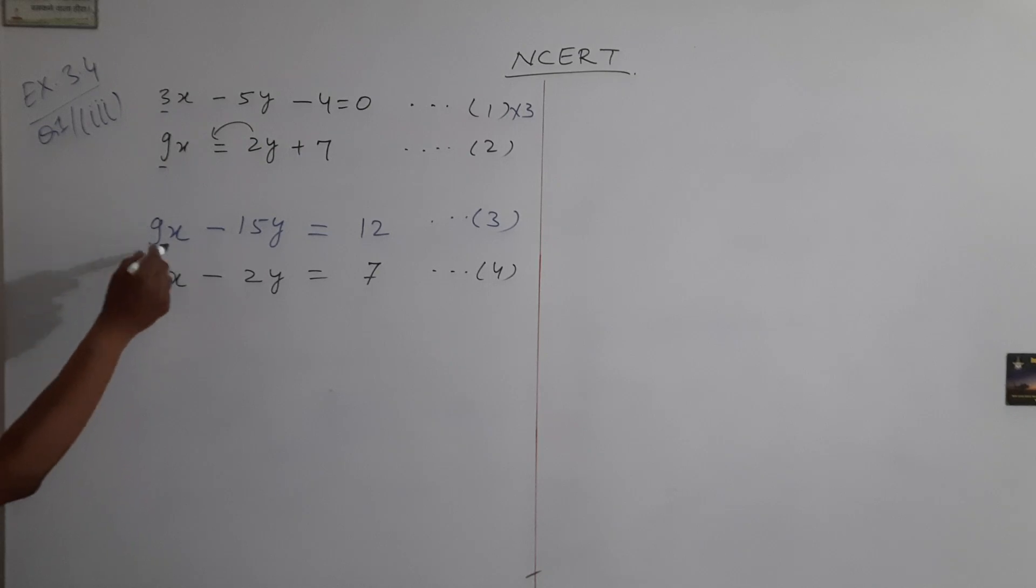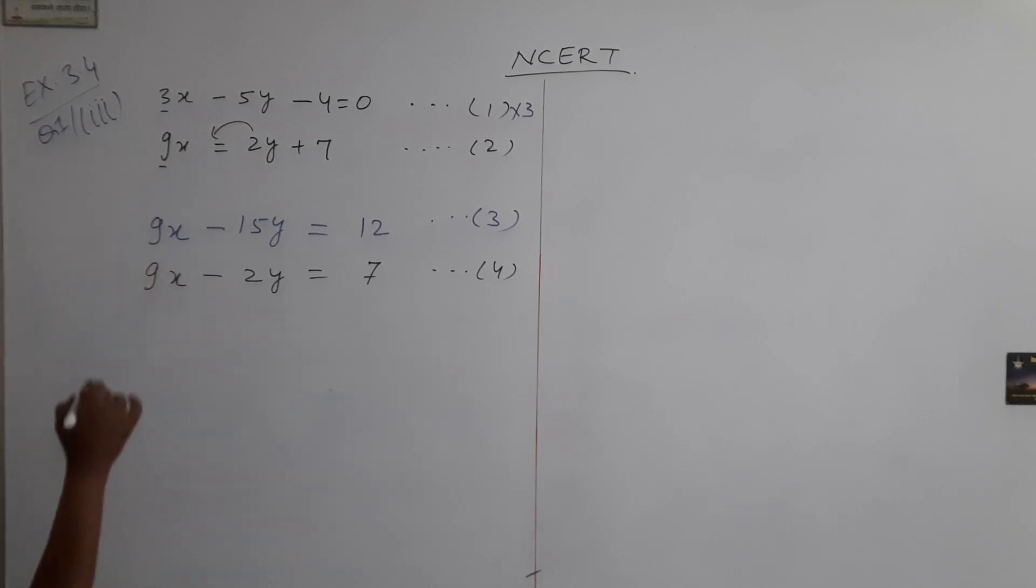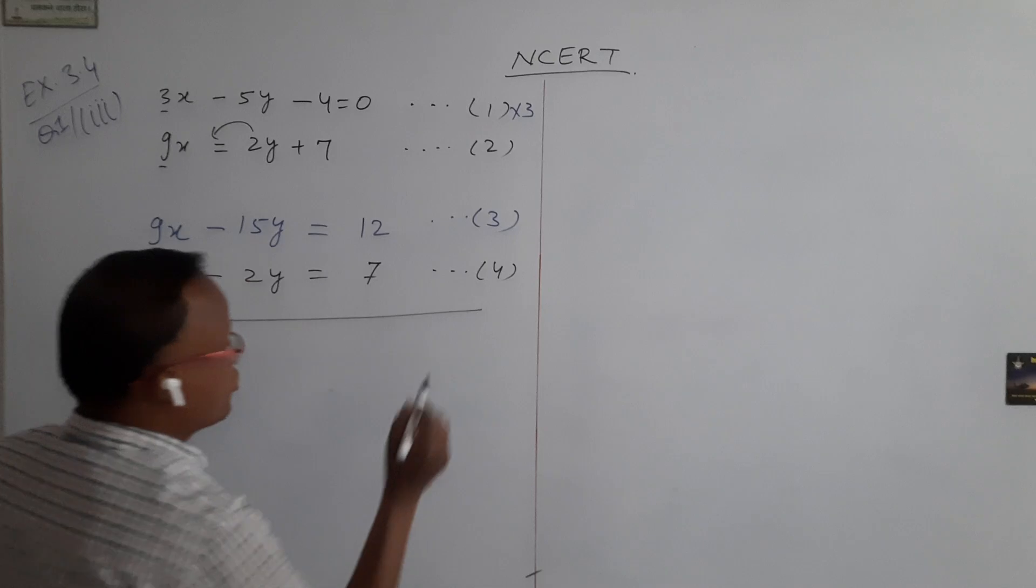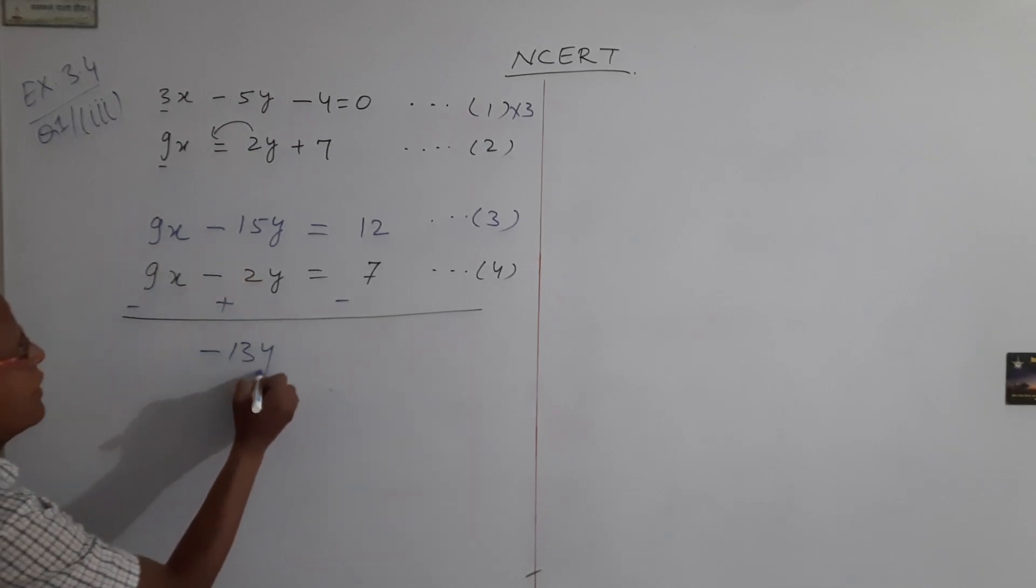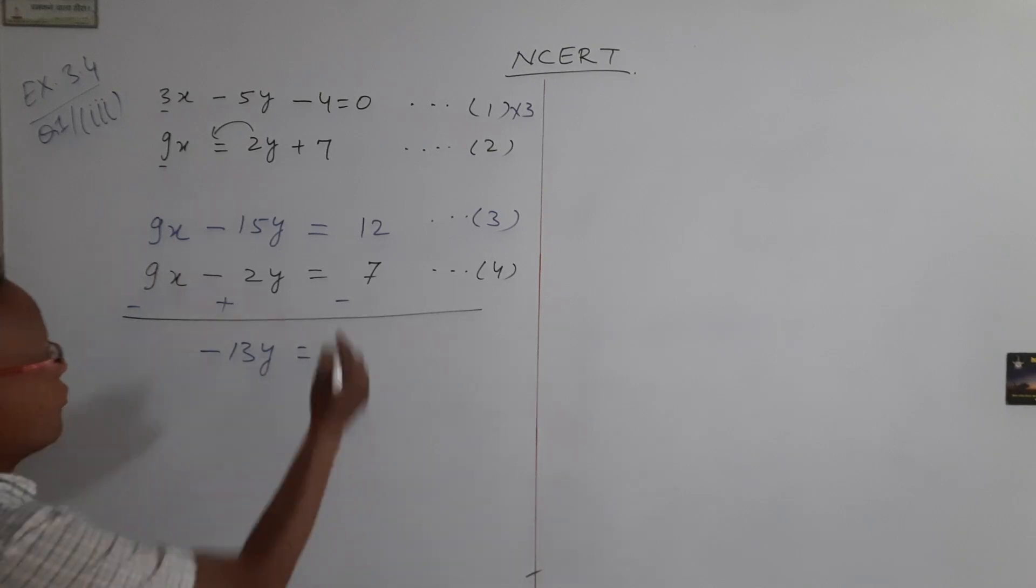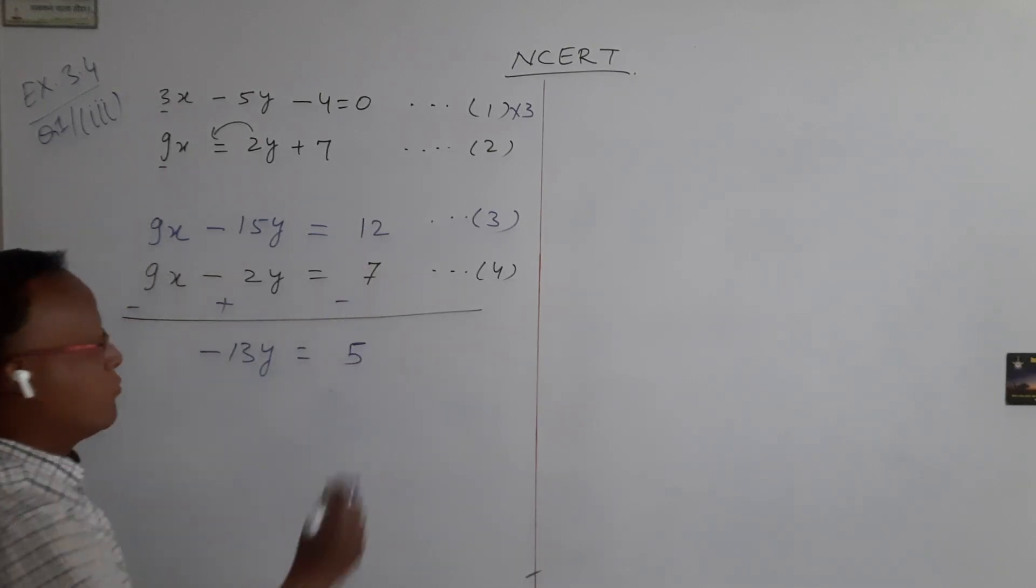Now the coefficient of x in both is plus 9, same sign, so we subtract these two equations. So subtracting equation 4 from equation 3, when subtracting we change the sign, so plus minus becomes plus, this becomes minus. 9x to 9x cancel out, this is 0, and minus 15y plus 2y, remember bigger quantity is negative, so it comes out minus 13y equal to 12 minus 7, which comes out to 5.